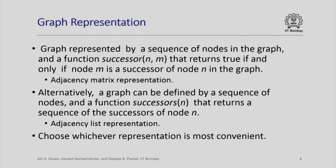We will look at how a graph is represented. A graph is defined by a sequence of nodes in the graph and a function called successor(n, m) that returns true if and only if node m is a successor of node n in the graph. We have a sequence of nodes which represents what are the nodes in the graph and a single function successor that tells us whether a given node m is a successor of node n or not. This is also called the adjacency matrix representation of a graph because for every pair of nodes it tells us whether a given node m is a successor of node n.